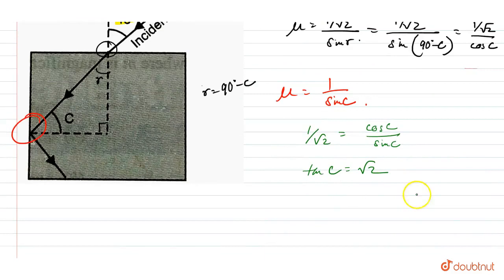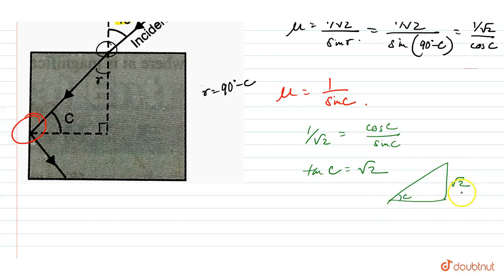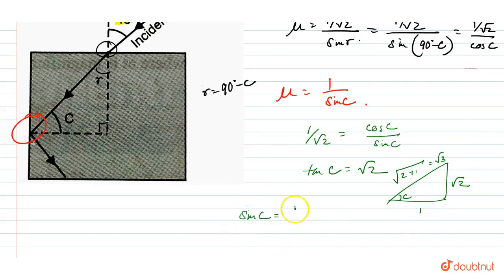If tan C is root 2, we make a right angle triangle where this angle is C. Tan equals height upon base, so height is root 2 and base is 1. The hypotenuse is the square root of (root 2 squared plus 1 squared), which equals root 2 plus 1, giving us root 3. So sine C is root 2 upon root 3, which is the square root of 2 upon 3.